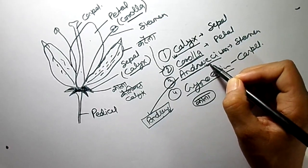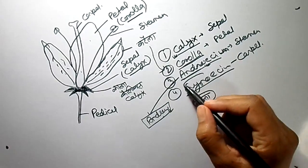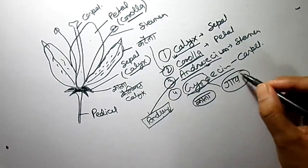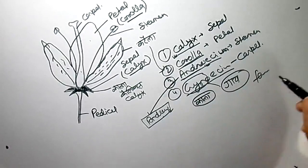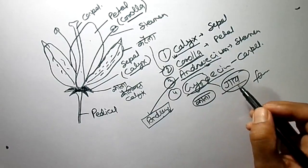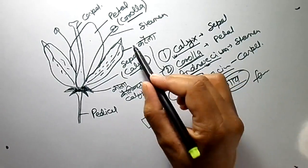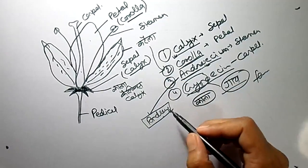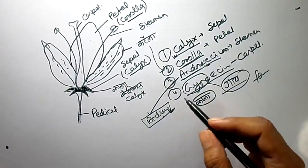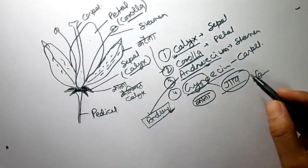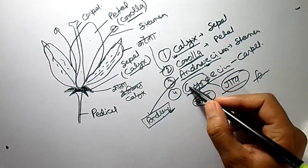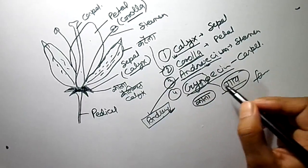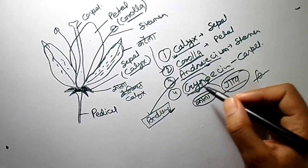Now we have to memorize Gynosium — this is the female part. By 'Guy' we can memorize Gynosium. Also, Gynecologist is a lady doctor, so 'Guy' means lady, meaning the female part. So: Calyx — Kala, Corolla — Kerala, Androsium — Andrew (male), Gynosium — Guy (female).